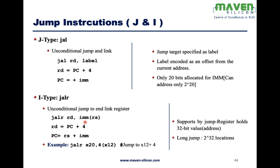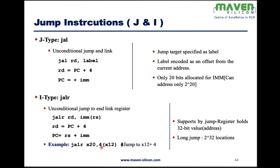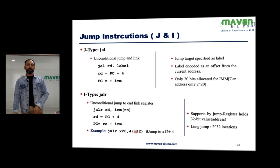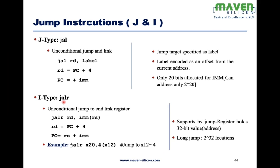We prefer I-type for JALR. JALR takes rd, immediate, and rs — the jump is calculated as immediate value plus the source register rs. Since rs is a 32-bit register, you can define a 32-bit value through it. For example, JALR x20, 4, x12 — the jump goes to x12 plus 4, allowing a jump within the range of 2^32 locations. With JAL the max range is 2^20, but JALR supports a long jump up to 2^32.